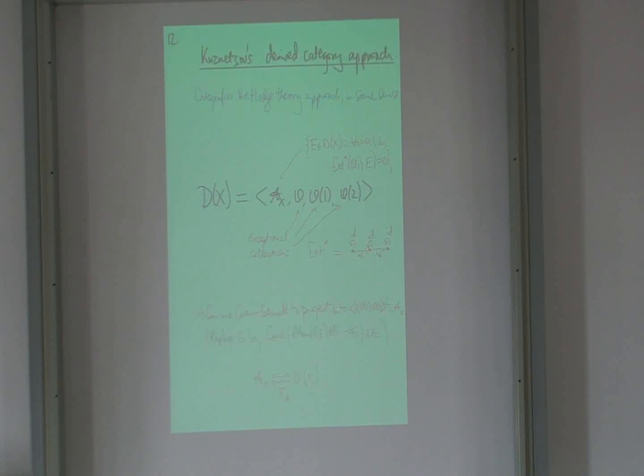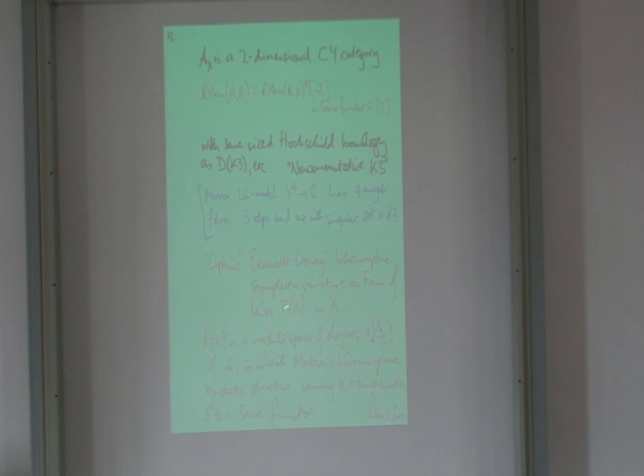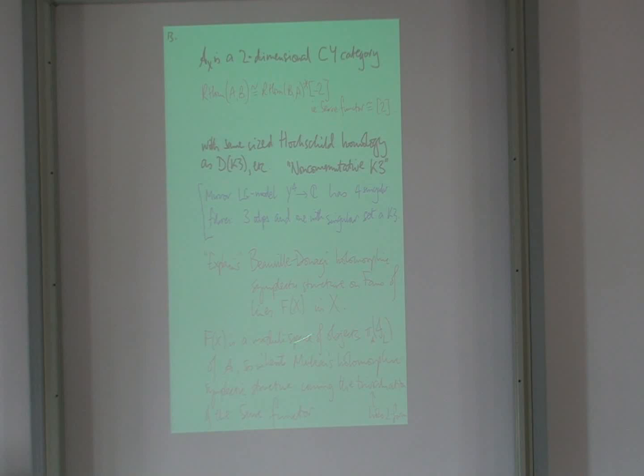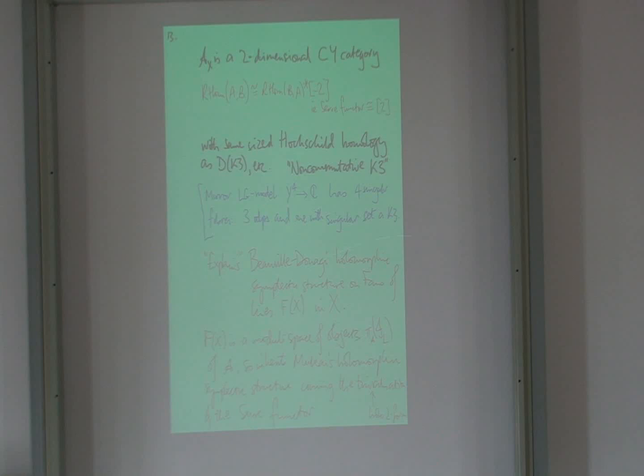Okay, and so the existence of this category, which you're supposed to pretend is a K3, kind of explains the Beauville-Donagi amazing holomorphic structure on the Fano of lines in X. So this Fano parametrizing lines in X, which is four-dimensional, is really a moduli space of objects in this category, and so it has a Mukai symplectic structure. So because it's really a moduli space in K3 circles. So it gets the holomorphic symplectic structure from the kind of holomorphic symplectic structure on here.